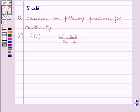Hi and welcome to the session. Let us discuss the following question. Question says, examine the following functions for continuity. C part is, f(x) is equal to x square minus 25 upon x plus 5.